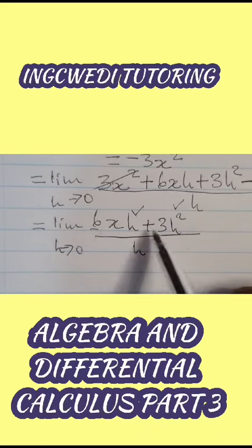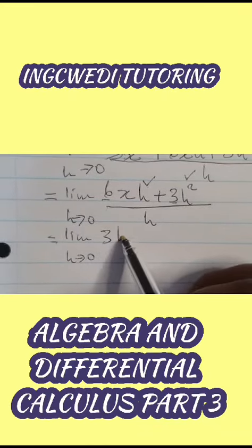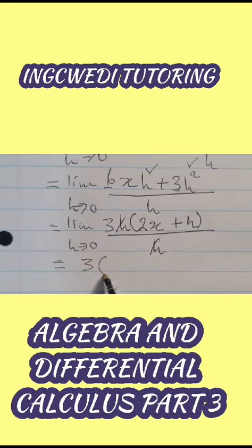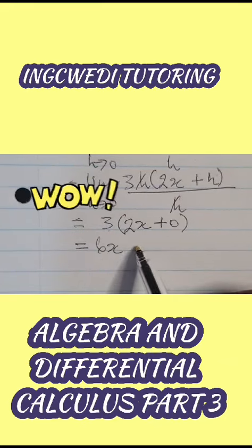h is common, and 3 is also common. So we take 3h out. Now this h will cancel, and as h approaches 0, we get 6x.